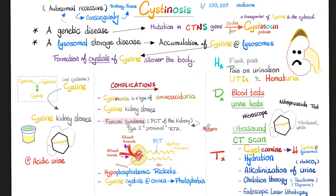Management: there is a medication called cysteamine, which decreases cystine in the lysosome. To decrease the risk of stones, hydration is key. If the stones form in acidic urine, you do the opposite — alkalinize the urine. If the patient cannot pass the stones spontaneously, then we can destroy them by laser. That refers to the stones, of course, not the patients.